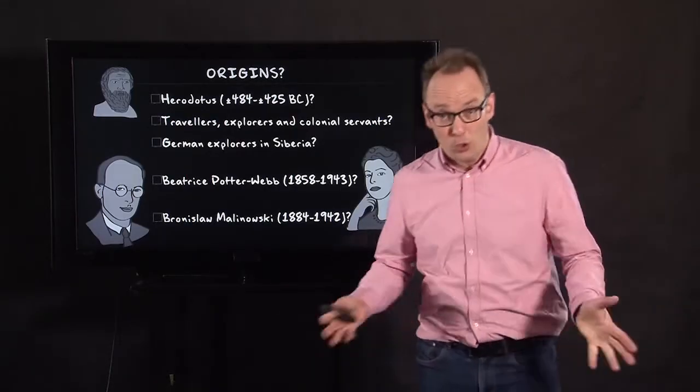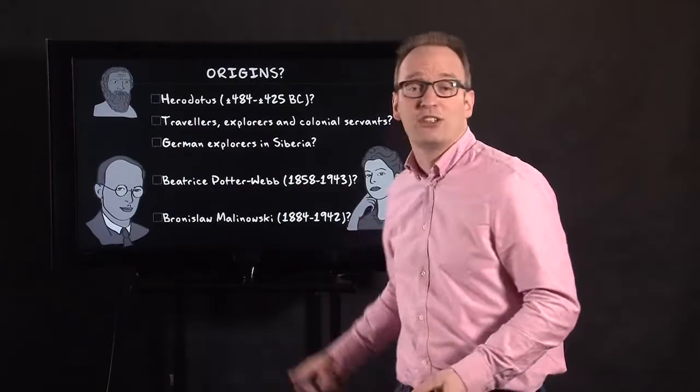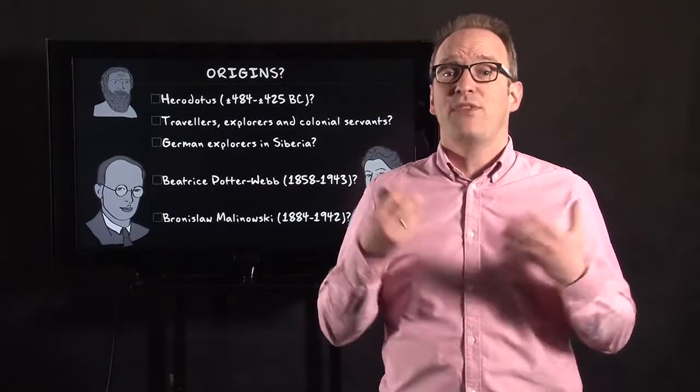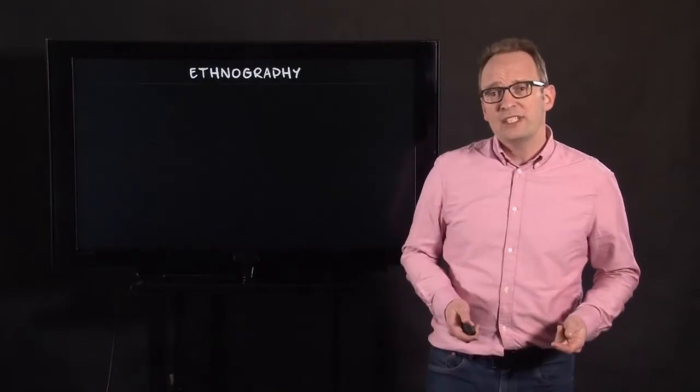It was the only place he could possibly stay. He wasn't allowed in Australia. So he stayed at the Trobion Islands and did his famous research. Among other things, the Kula trade.